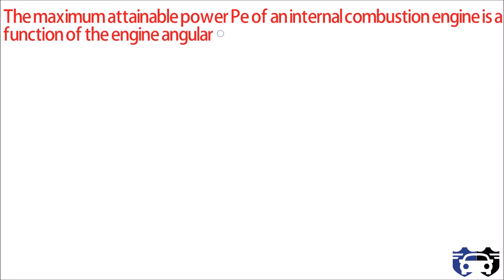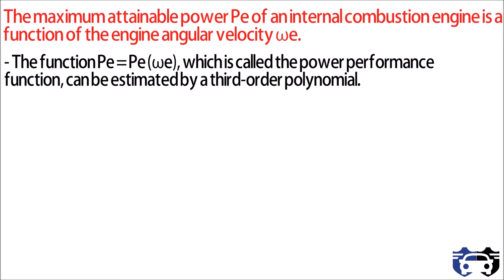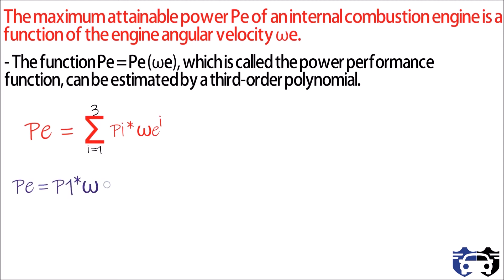The function pe equals pe(omega e) is called the power performance function, and it can be estimated by a third order polynomial. We write pe equals the sum for i from one to three of pi multiplied by omega e to the power i, which gives pe equals p1 times omega e plus p2 times omega e squared plus p3 times omega e cubed.